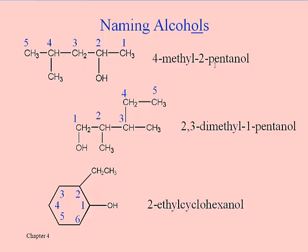Notice this first one is named as a 2-pentanol. For rings, as before, cyclo appears in their name, and the OH group is always going to be the number one carbon in a cyclic alcohol. So cyclohexanol refers to cyclohexane with this OH group. And if there's an ethyl group next to that one, then that would make it 2-ethylcyclohexanol.